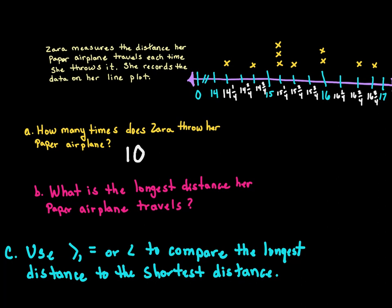What is the longest distance her airplane travels? Her longest distance is closest to 17, so that would be 16 and three-fourths feet. That's the longest she was able to do it, but she only did that one time because there is just one X there.